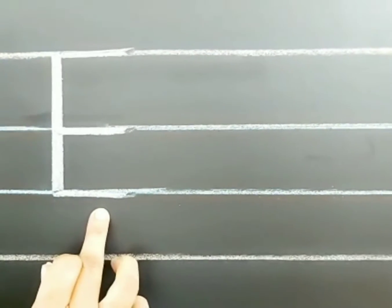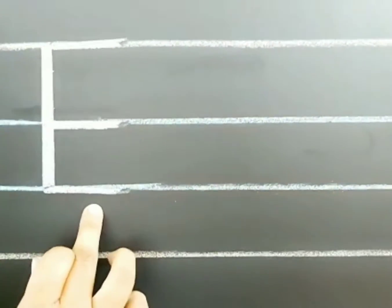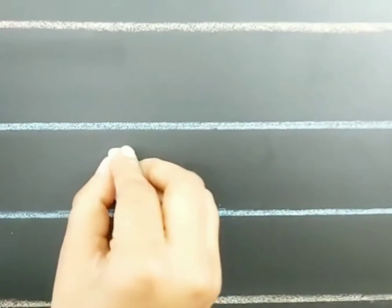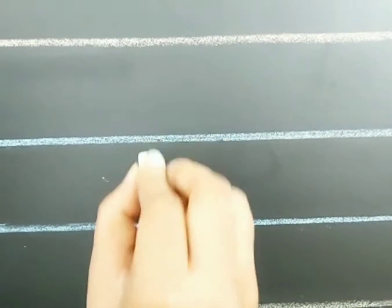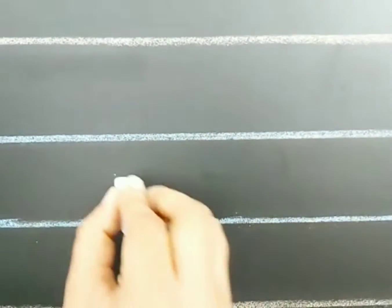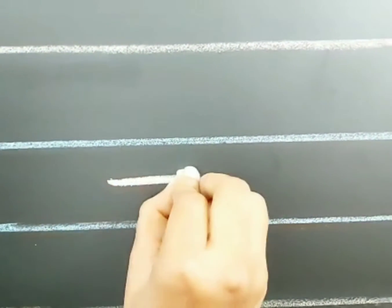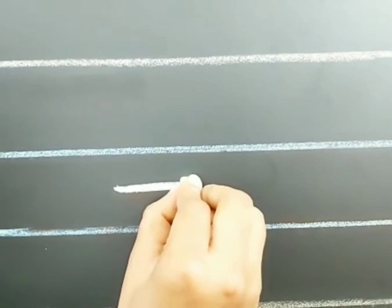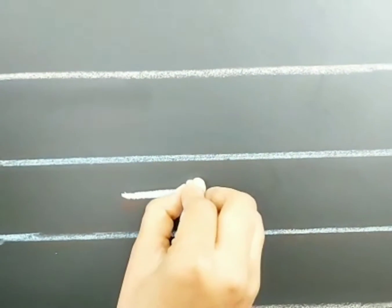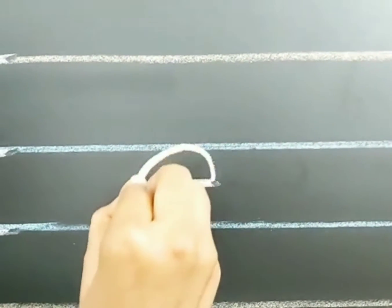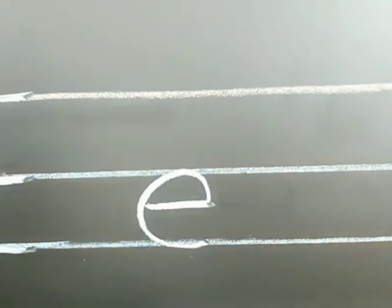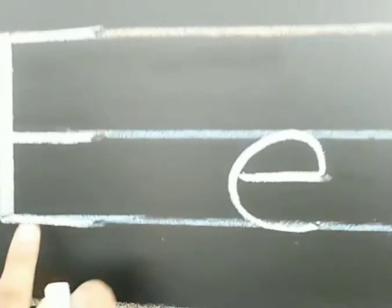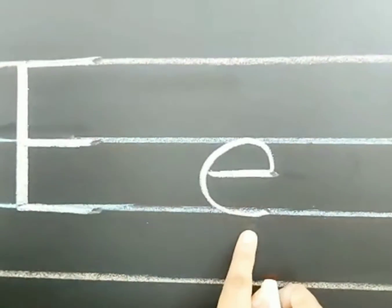Now we are going to write small e. How to write small e? First, we have to write one sleeping line in between the two blue lines. At the end of the sleeping line, draw one C curve. The C curve should touch the two blue lines. This is capital E and this one is small e.